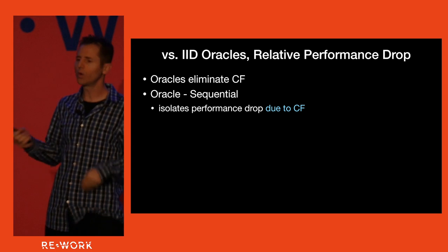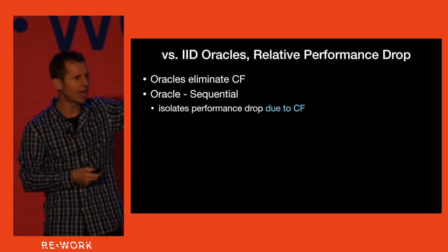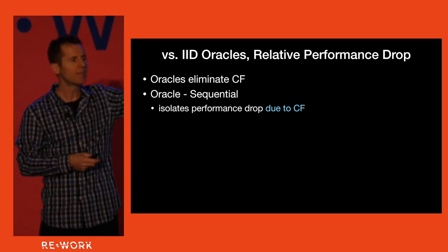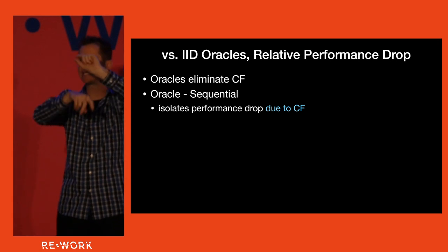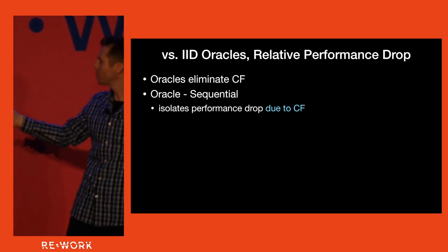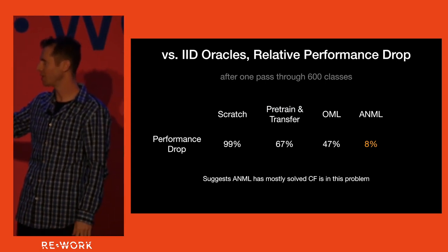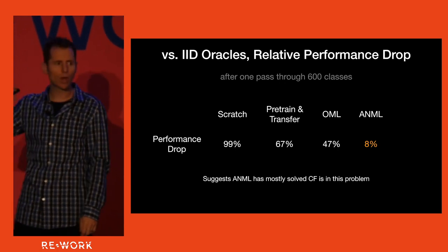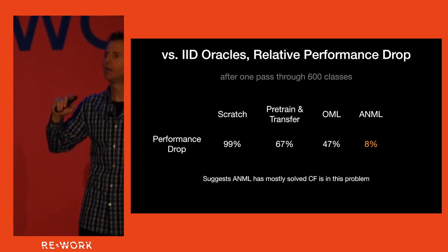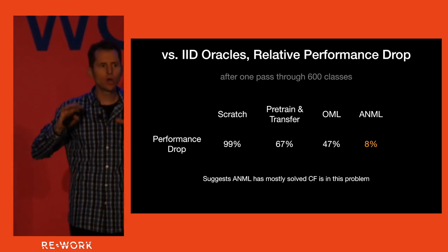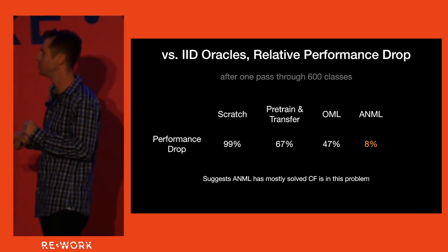One way to isolate the effect of catastrophic forgetting is to take performance when training on the same data IID — with random shuffling, not sequential — as your upper bound, then subtract performance in the sequential case. That gap is the effect of catastrophic forgetting. With normal deep learning, you get a massive 99% drop — it doesn't work at all sequentially. Pre-training also falls off a cliff. OML achieved about a 50% reduction in catastrophic forgetting. ANIMAL is down to about 8%, so more or less, catastrophic forgetting is no longer the thing really holding the system up. ANIMAL has more or less solved the majority of problems due to catastrophic forgetting on this task, which is very exciting.